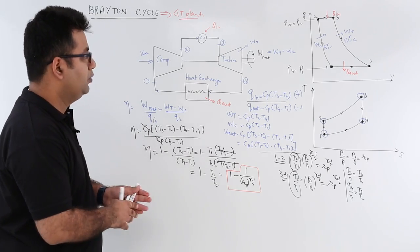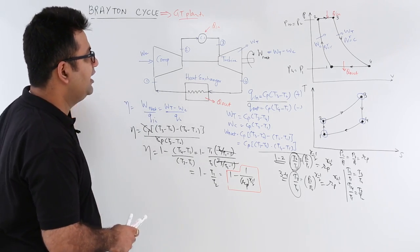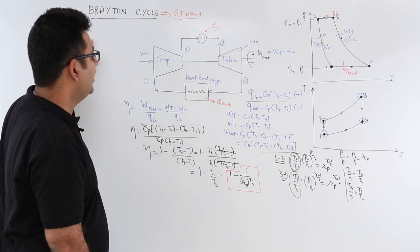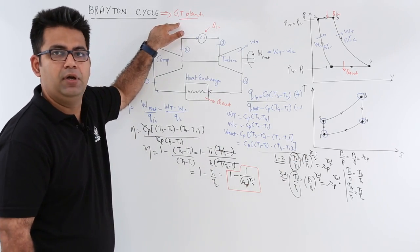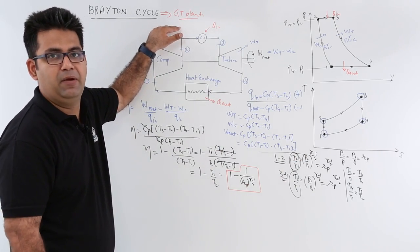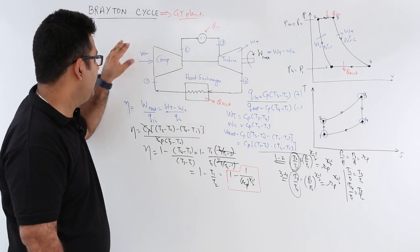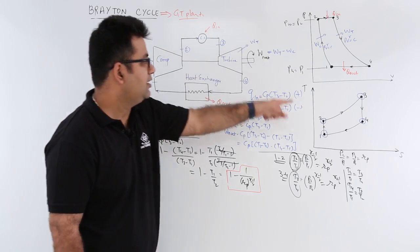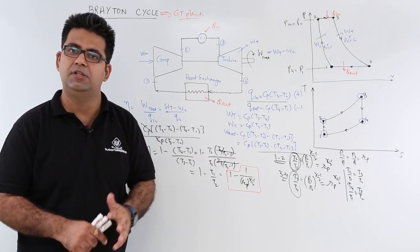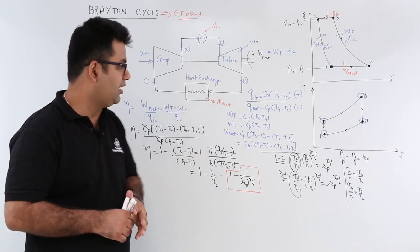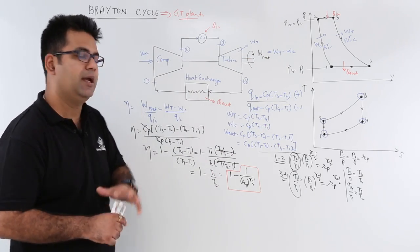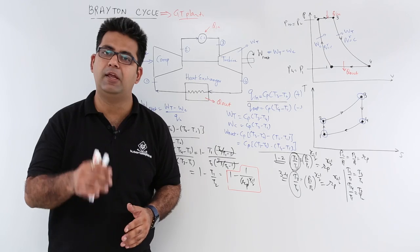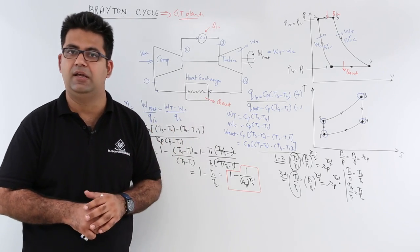I hope you understood this entire mathematical analysis for the Brayton cycle, which is the cycle for gas turbine plants. These are the essential components, and these are the PV and TS plots. Now, after understanding the Brayton cycle, let's look at some numerical questions on the Brayton cycle.